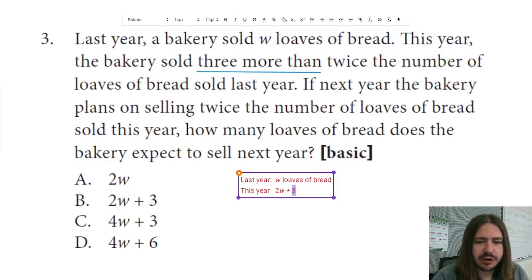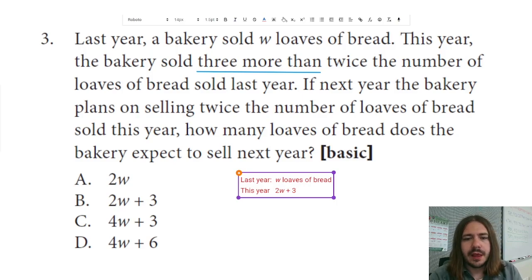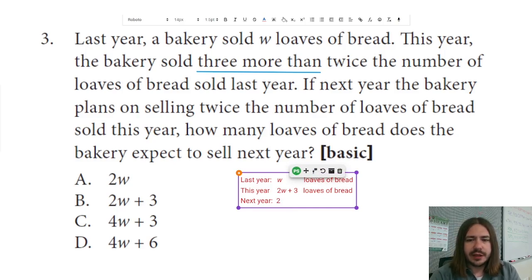Okay, so that's the expression that will represent how many loaves of bread we sold this year. And then finally, we're talking about next year. Next year, the bakery plans on selling twice the number of loaves of bread that it sold this year. We already know how many loaves of bread it sold this year, which is 2W plus 3. So next year it should be twice that. So twice that would be like two times this year, whatever we got for this year.